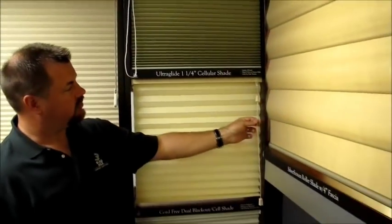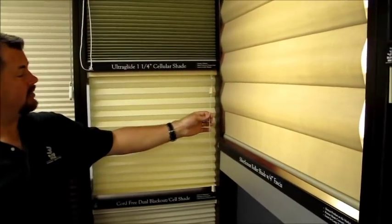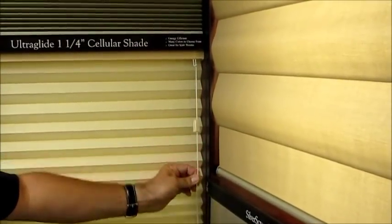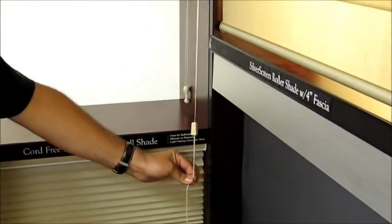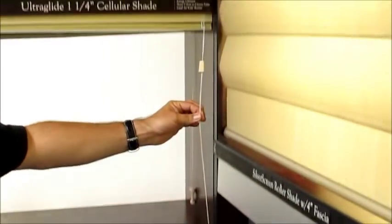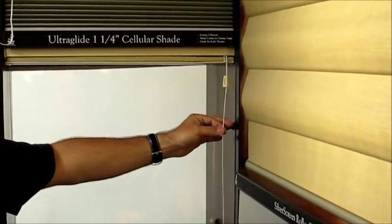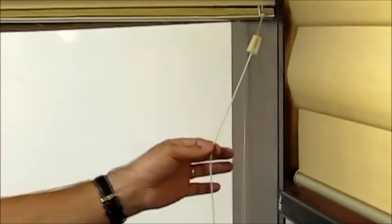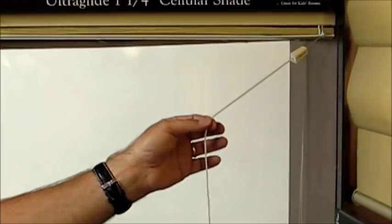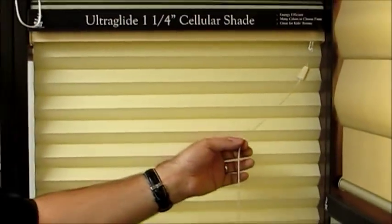Another great option for control is called an ultra-glide or a retractable cord. Here, what happens is when you pull the shade down, typically your cord would stay long. In this model, it retracts back up into the head well. It keeps a nice, clean look and a very easy to function. It also has a release mechanism, so when you release the clutch, the shade comes down automatically.